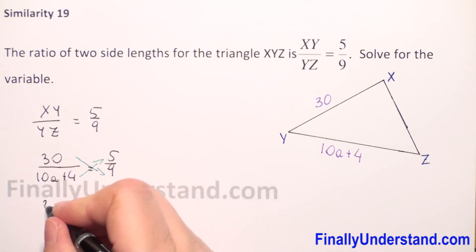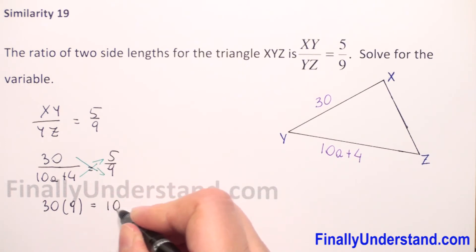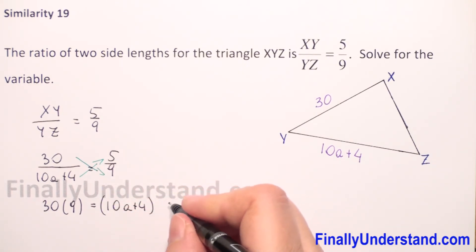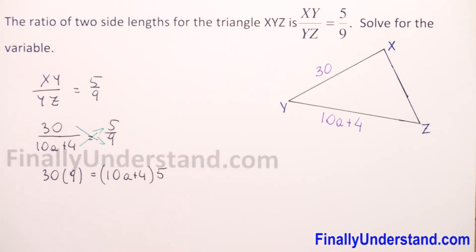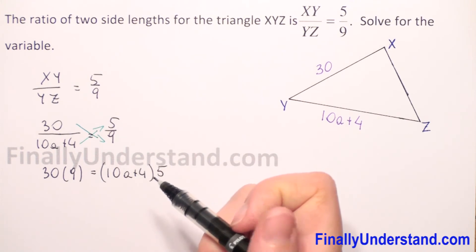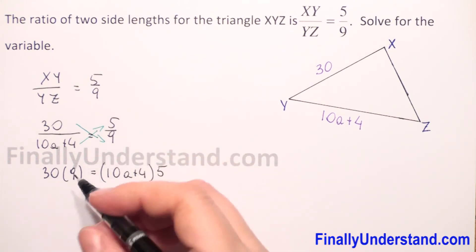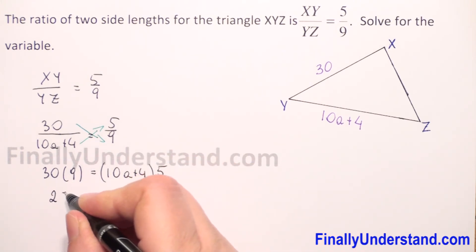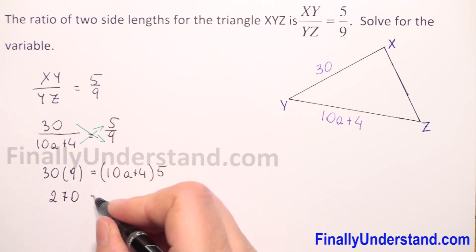So we have 30 times 9. This is equal to 10a plus 4 times 5. So we have 30 times 9 is 270. So 270 is equal,